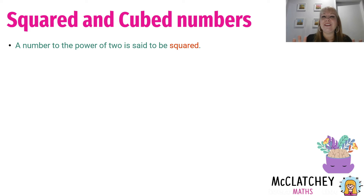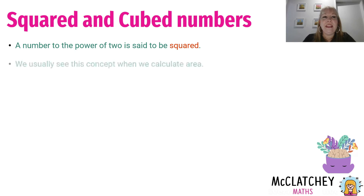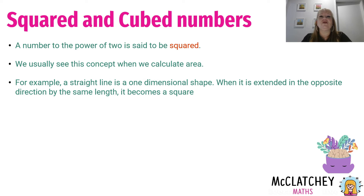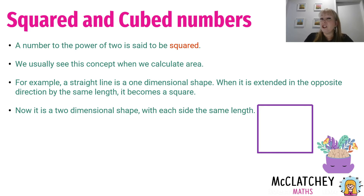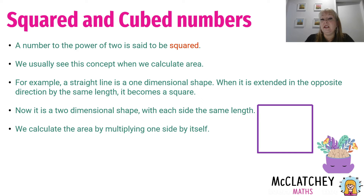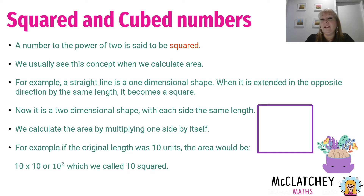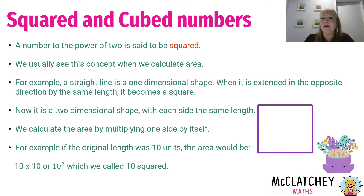Let's talk briefly about squared and cubed numbers. A number to the power of two is said to be squared. We usually see this concept when we look at things like area. Think about a straight line — that's a one-dimensional shape. When it's extended in the opposite direction by the same length, it becomes a square, a two-dimensional shape. We calculate the area by multiplying that initial side by itself. So if the original length was 10 units, the area would be 10 times 10 — another way of writing that is 10 squared. That's where we get the name squared from.